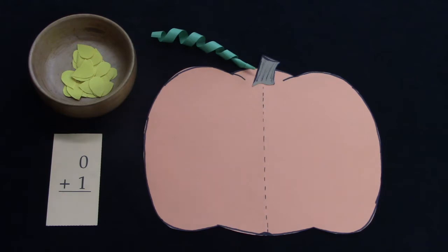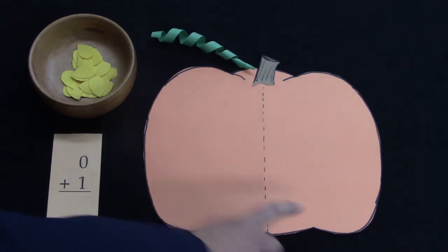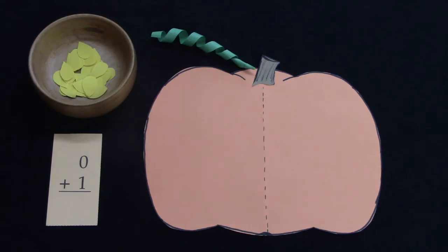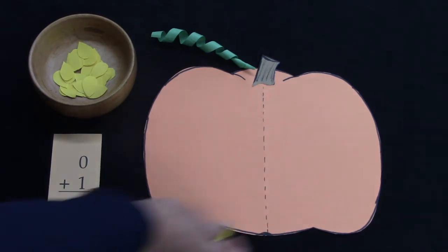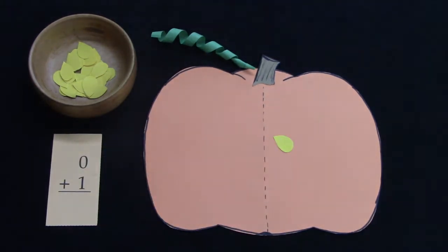Let's practice our math facts using pumpkin and pumpkin seeds. I have made two sides of my pumpkin and we're going to use seeds to practice. I'm going to put zero seeds on one side and how many am I going to put on the other? One. Zero plus one is how many pumpkin seeds? You're right! It's one!